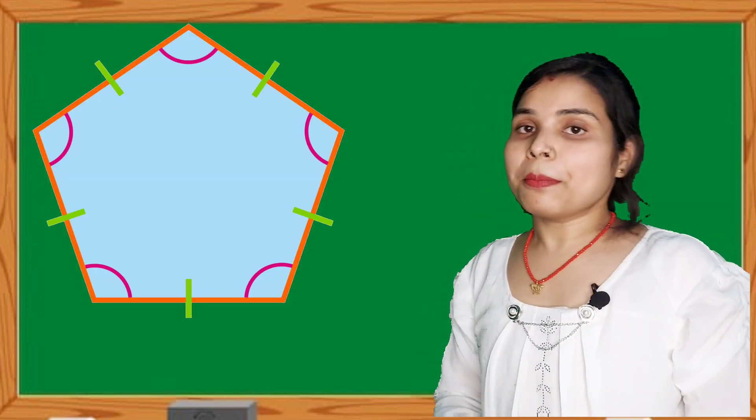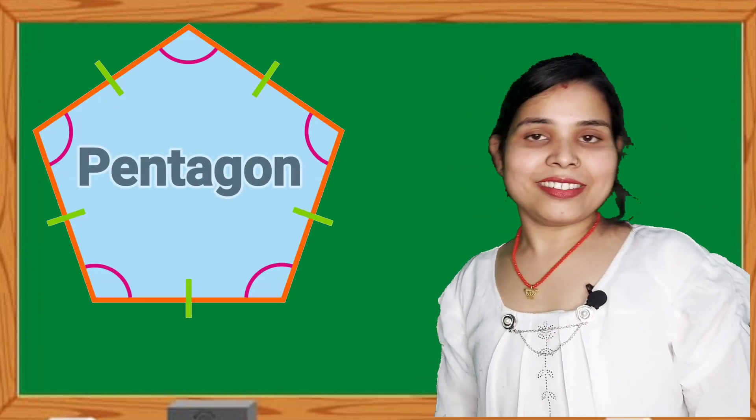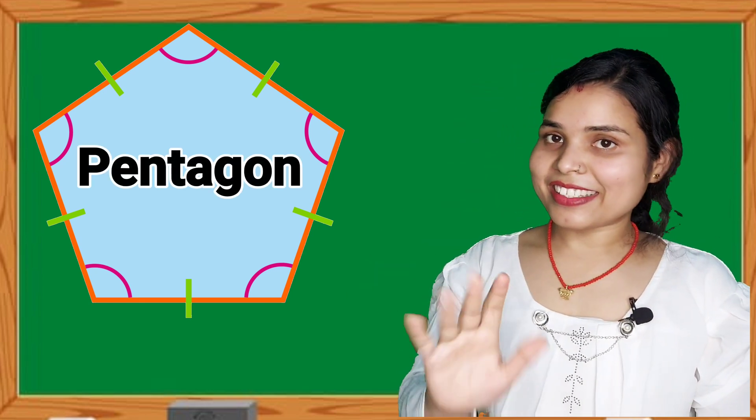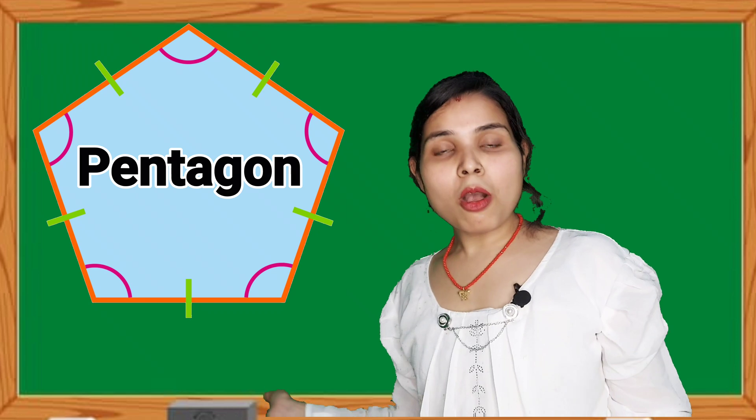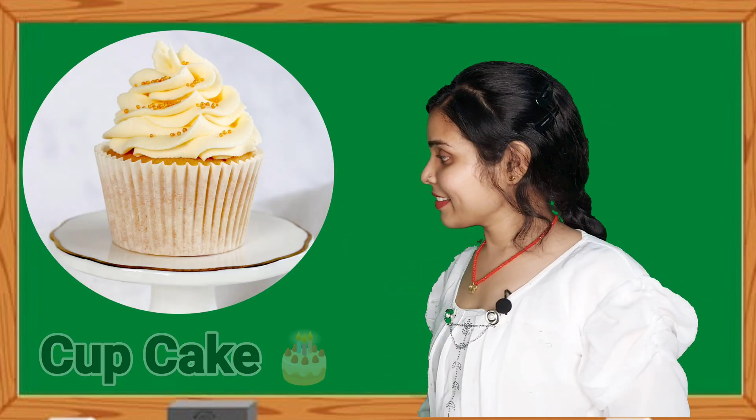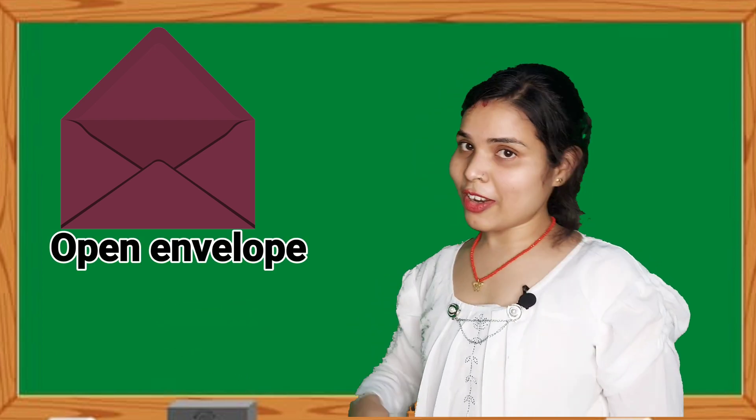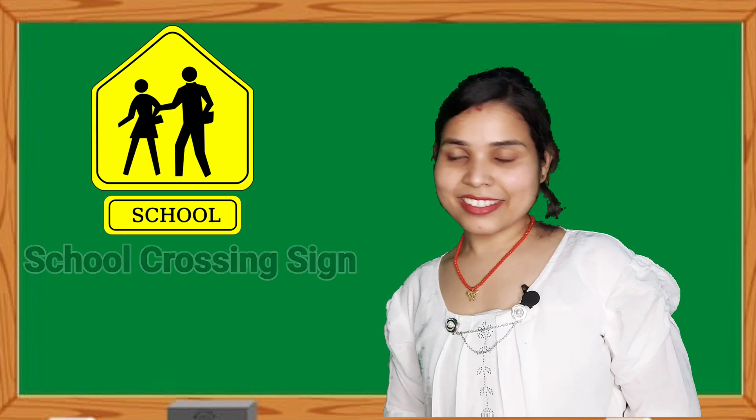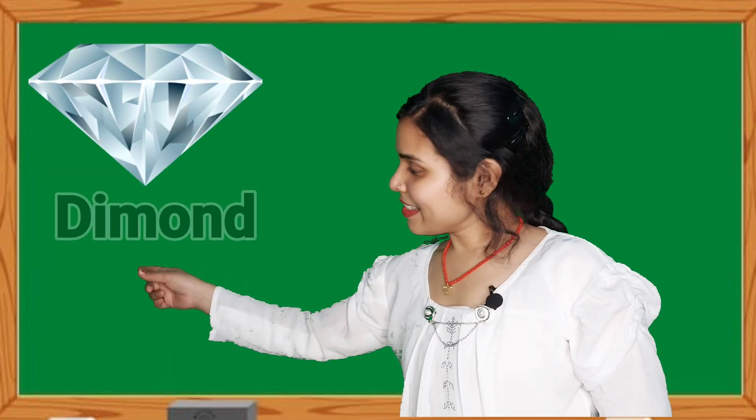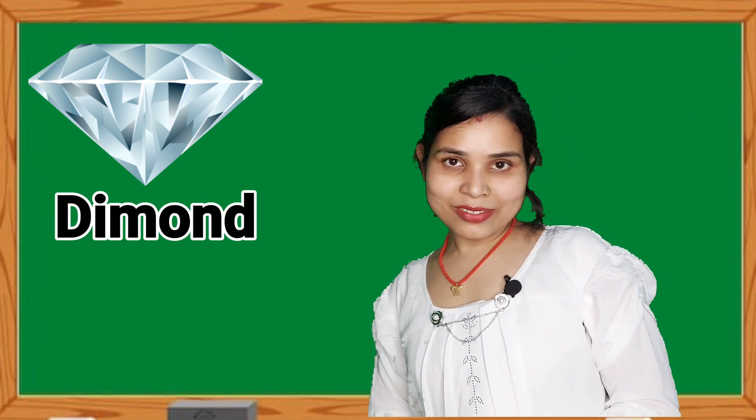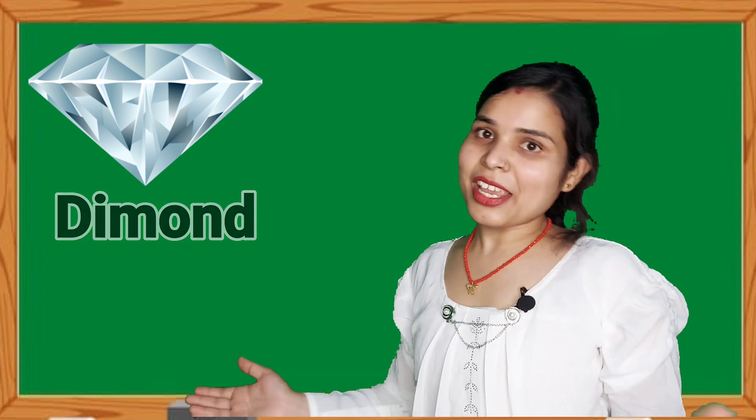Children, now next shape is pentagon. A pentagon has five sides. The shape of pentagon like cupcake, open envelope, school crossing sign, house and diamond. These are all examples of pentagon shape.